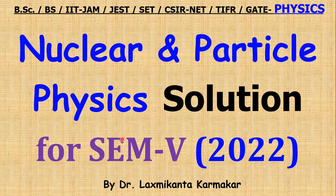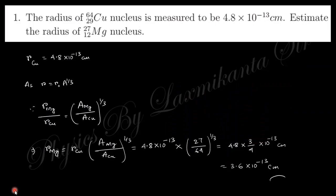Hello, welcome to everyone. In this video today we want to discuss some questions on nuclear and particle physics for semester 500, University of California. So let's start. First question says the radius of copper nucleus is measured, estimate the radius of this one.